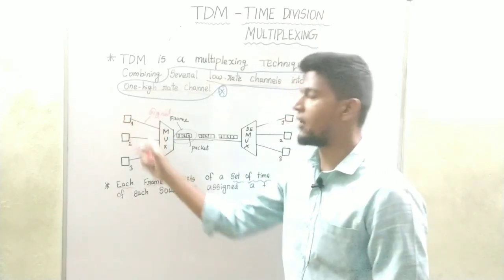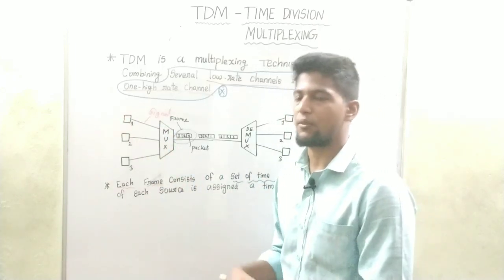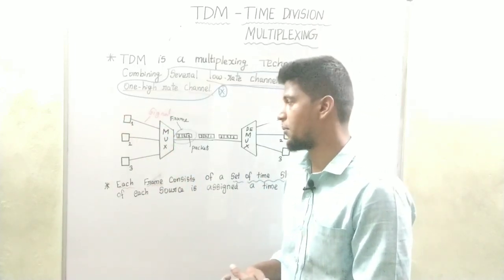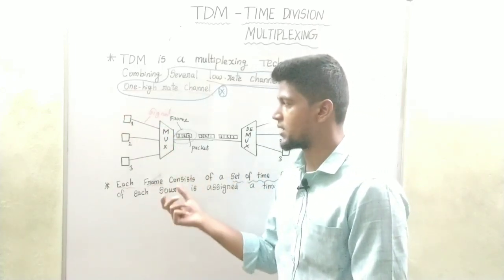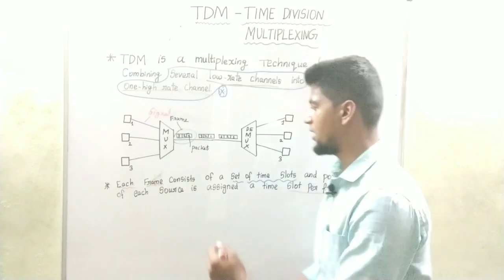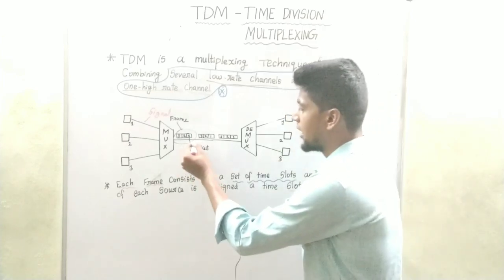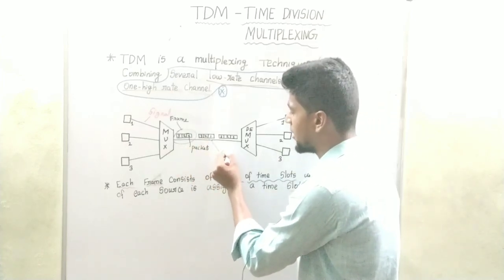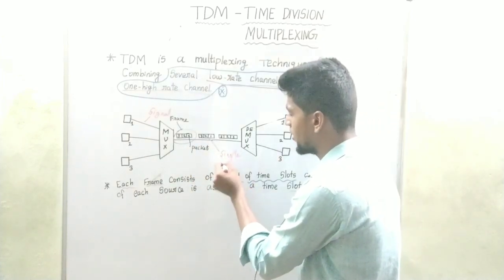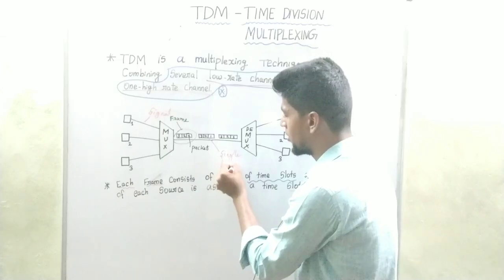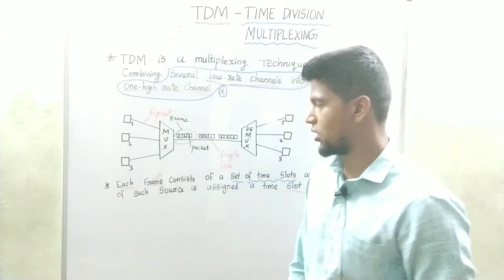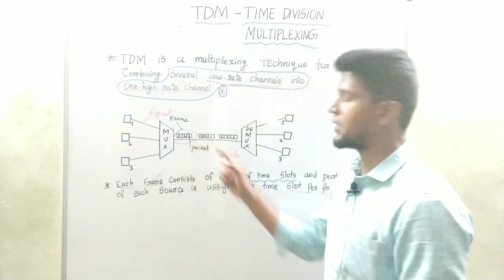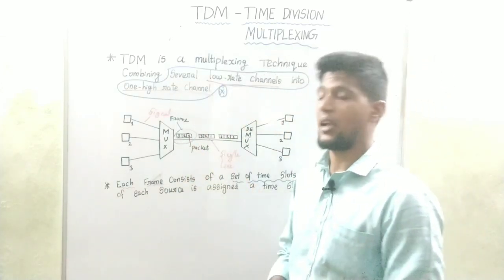In this system, we have a first preference — it is priority-based. If you do this, we will use a single line. As you know, this multiplexing uses a single line.